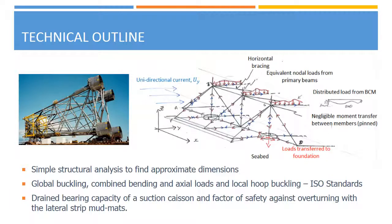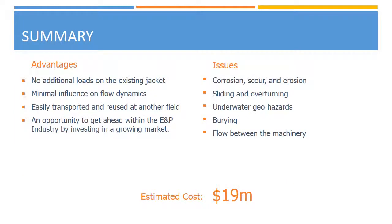Simple structural and geotechnical calculations were completed to estimate a material cost. Primary tubular members should have a typical diameter of 1.5m and a wall thickness of around 35mm. For the suction case on foundations, a diameter of 7.5m and a wall thickness of around 100mm is required for a factor of safety of 2. These were calculated using simple bearing capacity theory and considerations of skin friction. As the subsea solution is independent of the existing structure, we ensure the structural and fluid loading conditions it was designed for are still valid. Additionally, it presents an opportunity to get ahead within the energy and petroleum sector and develop expertise in a growing market.